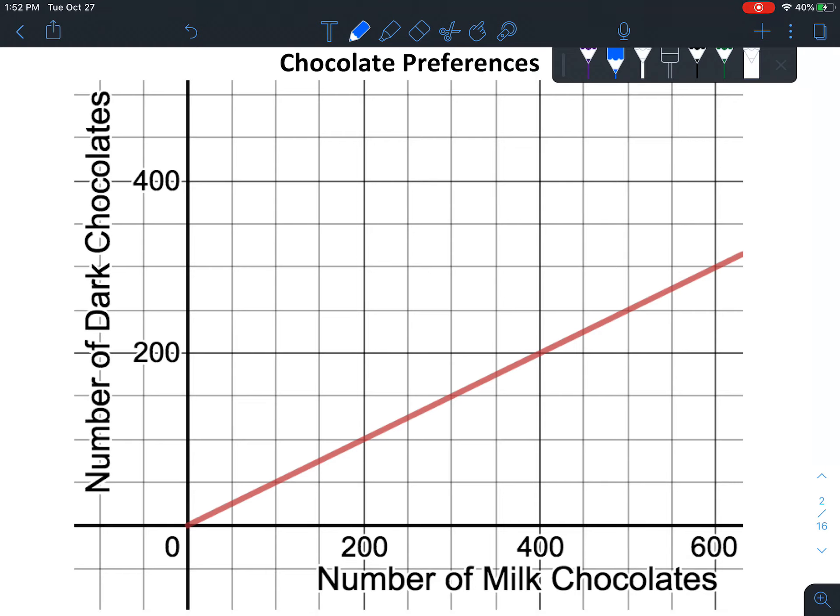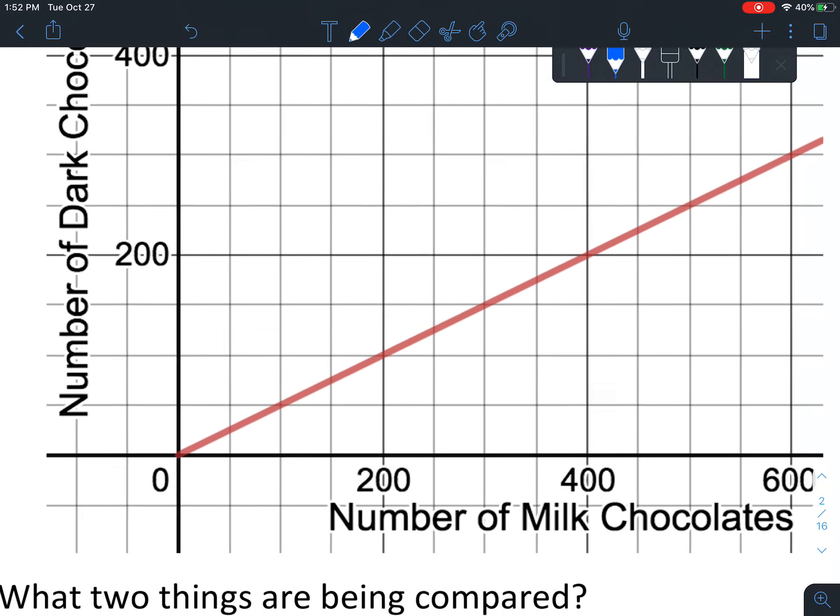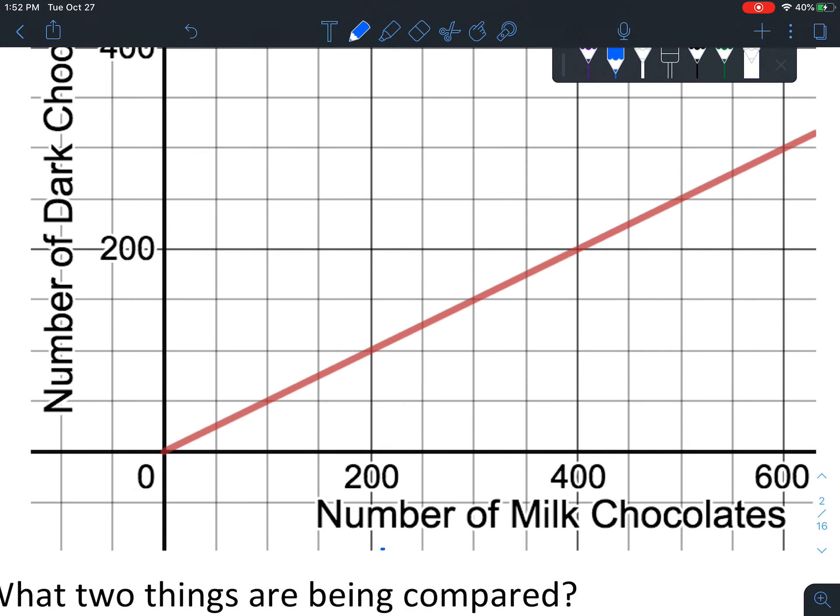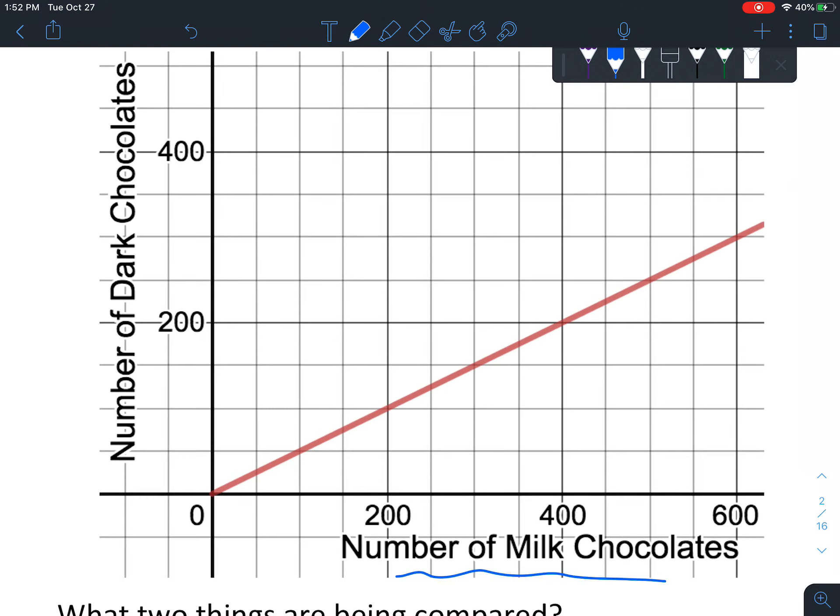It also would depend a little bit on the venue. So if I was at the Senior Center, there might actually be more people wanting dark chocolate. But if I was in elementary school selling chocolate, there tend to be more people who want milk chocolates. But across the board, milk chocolate was about twice as popular. So for instance, you can see that on the graph. So on the bottom, it says number of milk chocolates. That's our input. The number of dark chocolates is our output.